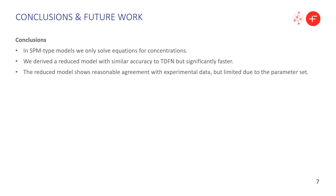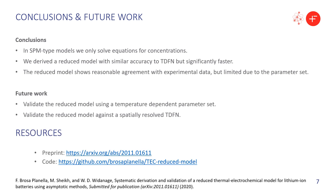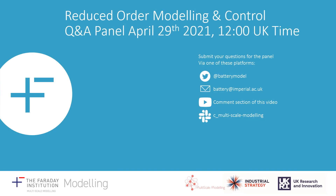Extending the parameter set to account for temperature is part of the future work. If you want to learn more about parameterization of the thermal model, I suggest you check Kieran O'Regan's talk in the experimental session. We also want to validate the reduced model against a spatially resolved thermal DFN model. You can find the preprint on arXiv and the code we use on GitHub — the code is based on PyBAMM, which is an open source Python battery mathematical modeling package.